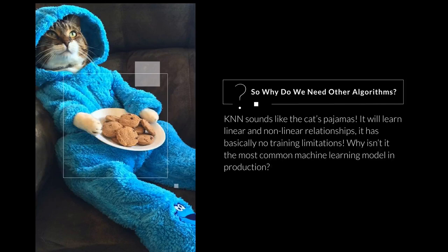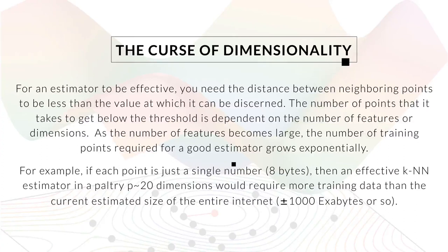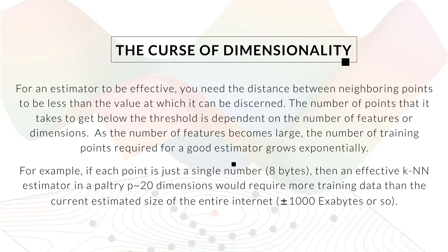Why isn't k-nearest neighbors the most common production model? The curse of dimensionality. In two-dimensional space it's easy to see how dimensions contribute to the estimator. As dimensionality grows, k-nearest neighbors just figures out distance values — for each new dimension you add to the search space, you increase total volume exponentially, meaning the ability to discern distance goes down exponentially. The result: if each point is just eight bytes, an effective k-nearest neighbors estimator for just 20 dimensions requires more training data than the current estimated size of the entire internet. If your dataset has a lot of dimensionality, k-nearest neighbors is not for you.